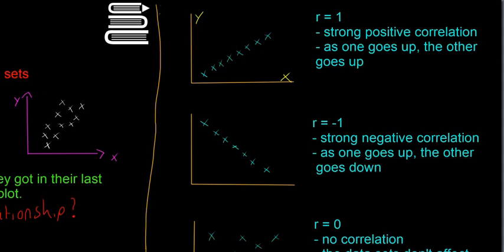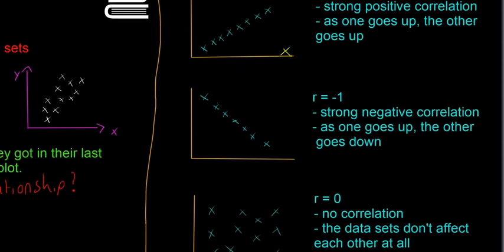The opposite of that is when they're still perfectly correlated, so they're still completely in a line, but R is equal to minus one. That's called a strong negative correlation because as one goes up the other one goes down. In this case your x variable is going up and your y variable goes down as the x goes up. But still R is equal to one because they're in a perfect line and one of them affects the other one pretty much perfectly.